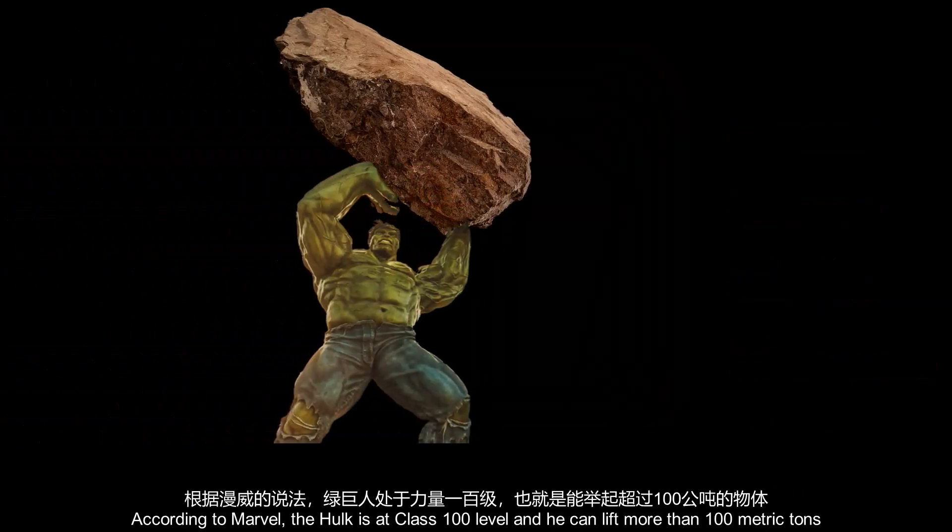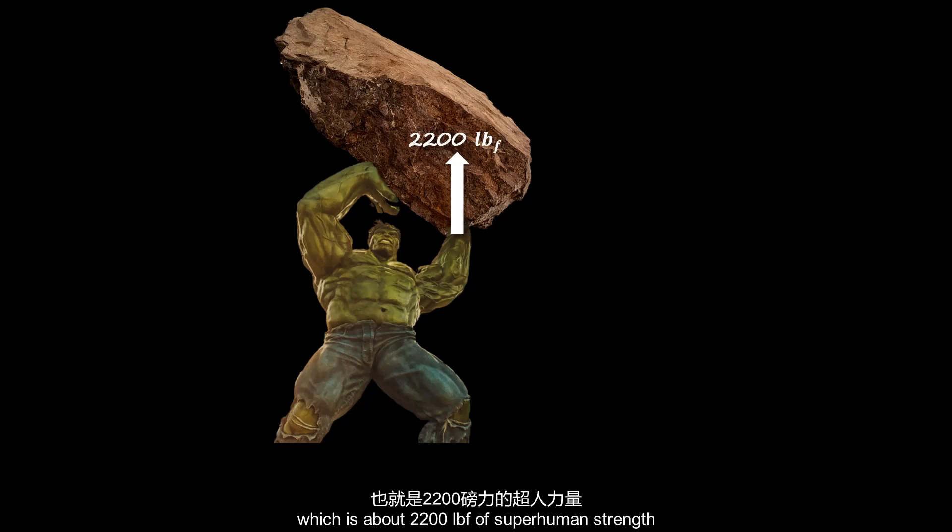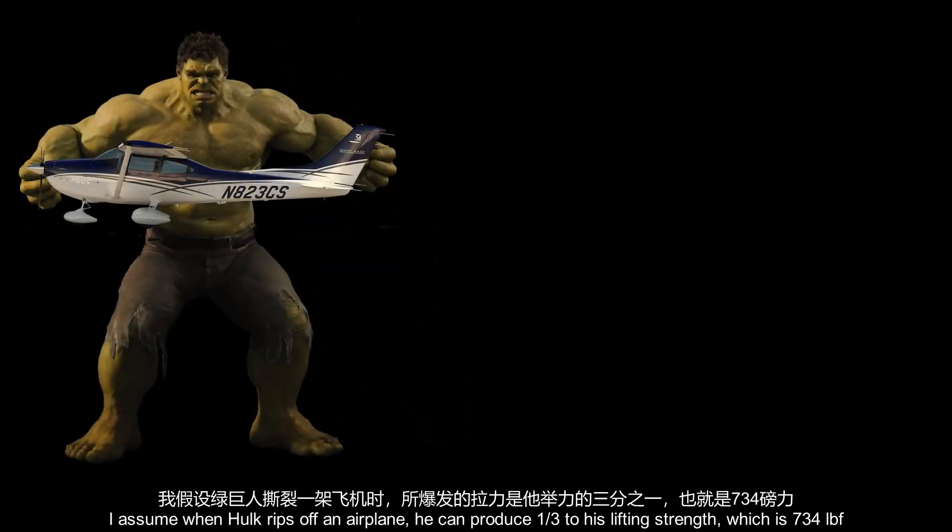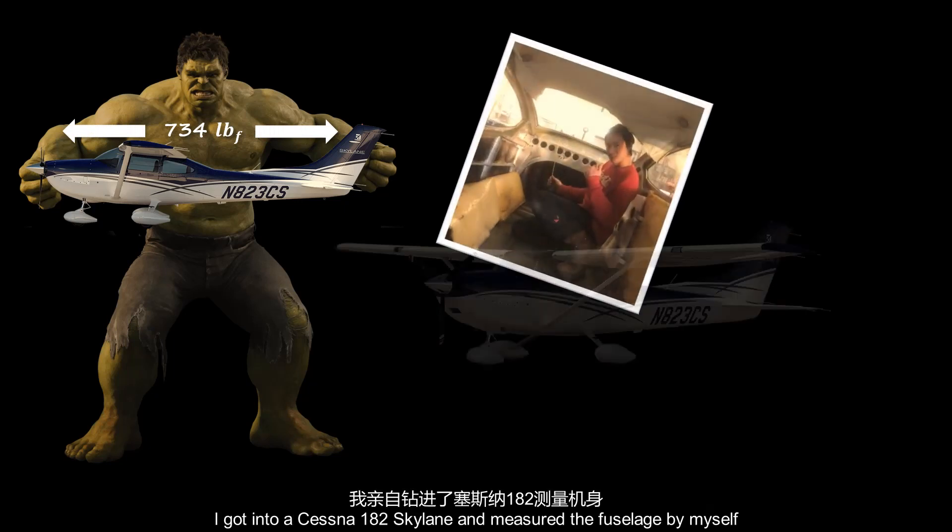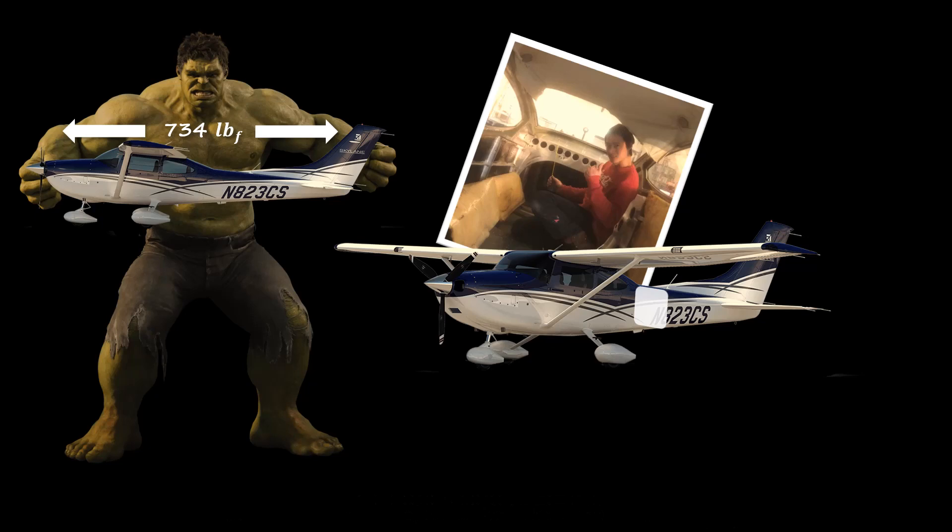According to Marvel, the Hulk is at class 100 level and he can lift more than 100 metric tons, which is about 220,000 pound force of superhuman strength. I assume when Hulk rips off an airplane, he can produce one third of his lifting strength, which is 734 pound force. I got into a Cessna 182 Skylane and measured the fuselage by myself since I couldn't find what I wanted in PLH.